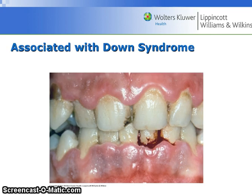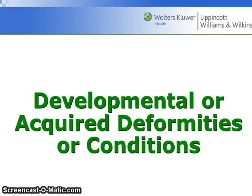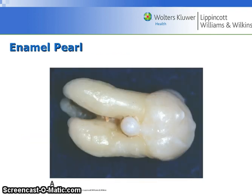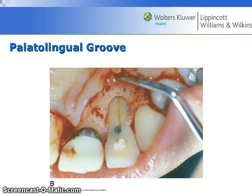Here is an example of periodontitis associated with Down syndrome. Developmental acquired deformities or conditions — tooth-related factors. Tooth anatomic factors that predispose periodontitis include cervical enamel projections, enamel pearls, palatolingual grooves, and tooth malalignment. Here is an enamel pearl, which we have discussed before. This image shows a palatolingual groove on a maxillary lateral incisor.